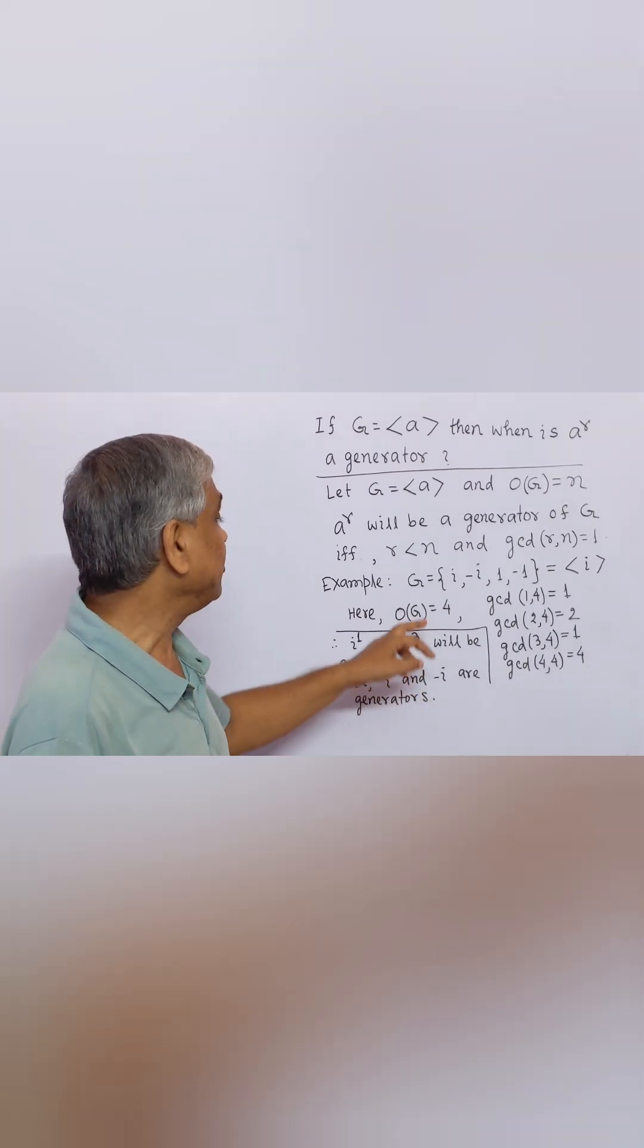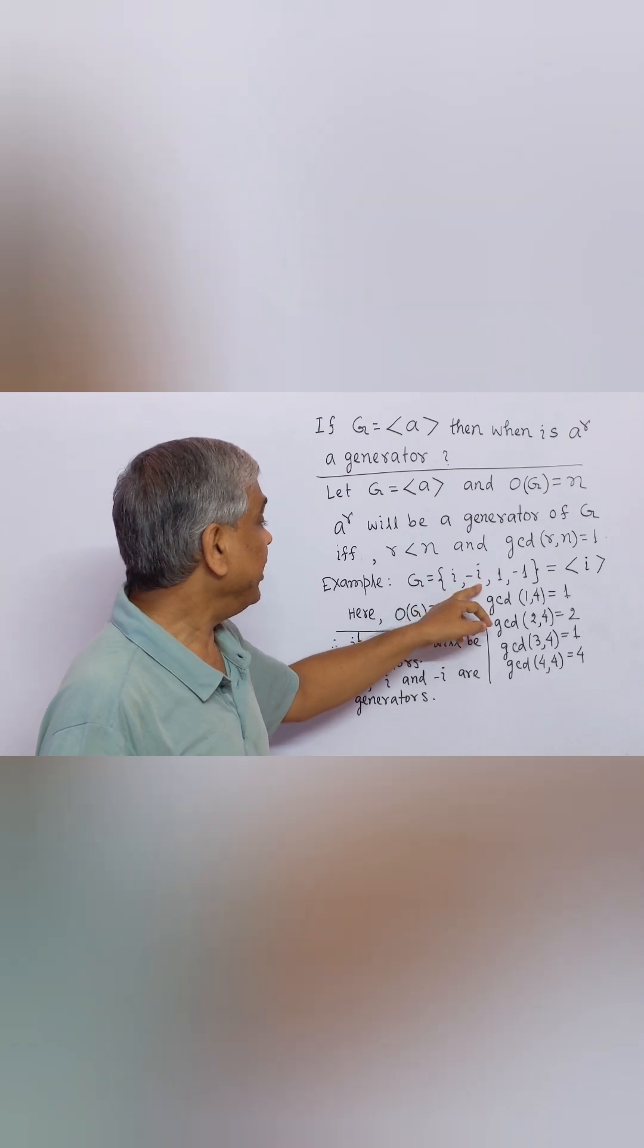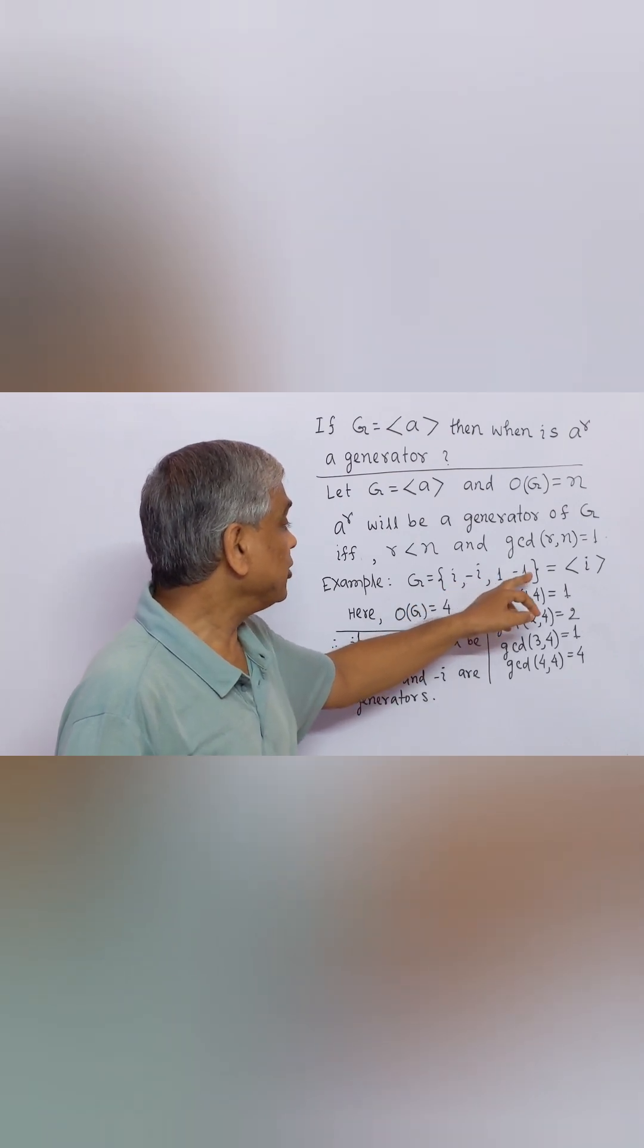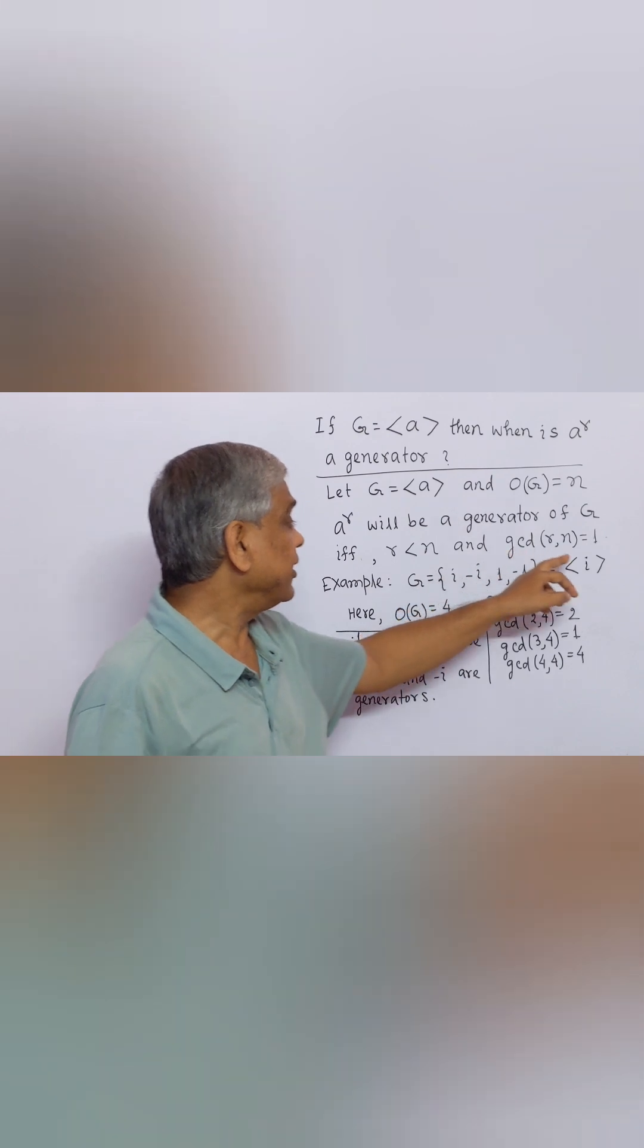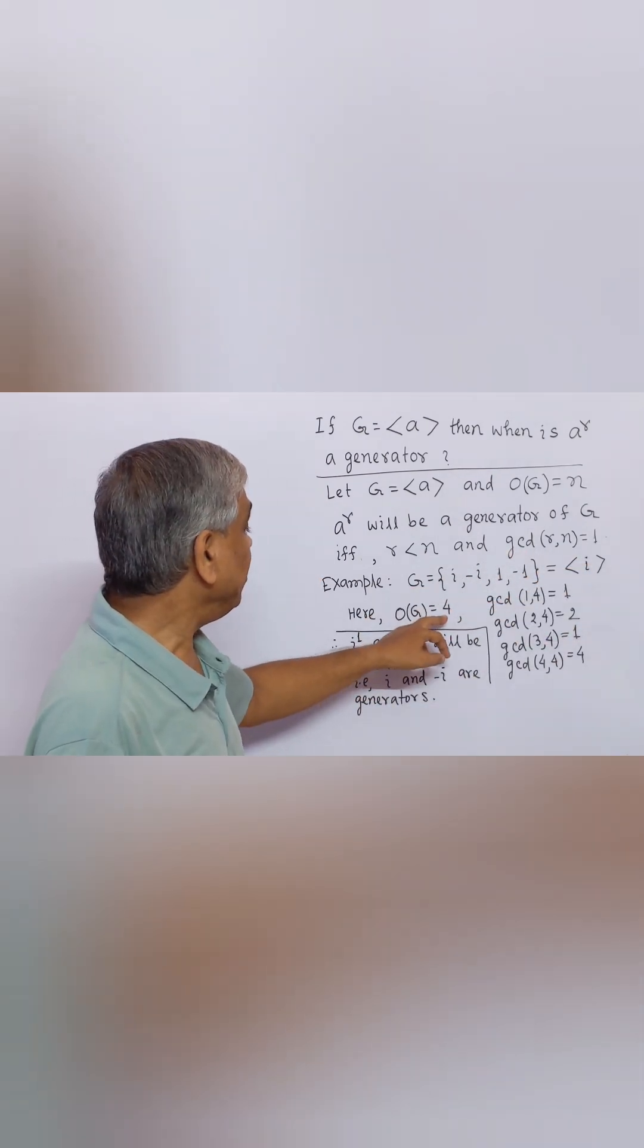For example, let we have a cyclic group G whose elements are I, minus I, 1, minus 1 and G is generated by element I. Here, order of G equal to 4.